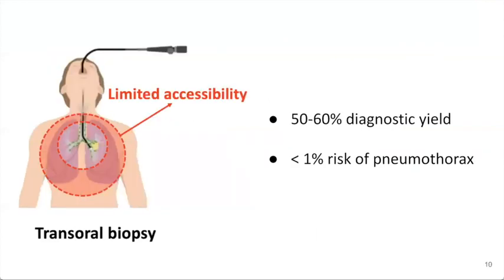The second technique, trans-oral biopsy, involves a physician navigating a bronchoscope through the mouth and into the airway towards a target lesion. It has a really good safety profile, with less than 1% of cases developing pneumothorax, but has a relatively poor diagnostic yield at just 50% to 60%. In addition, the number of patients that can benefit from this safe approach is limited because the technique is only able to access nodules that are close to an airway.